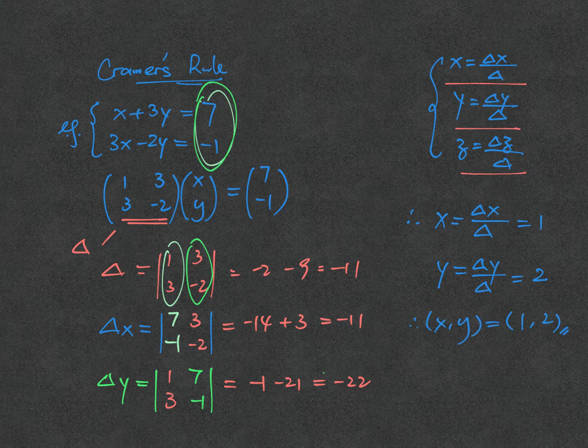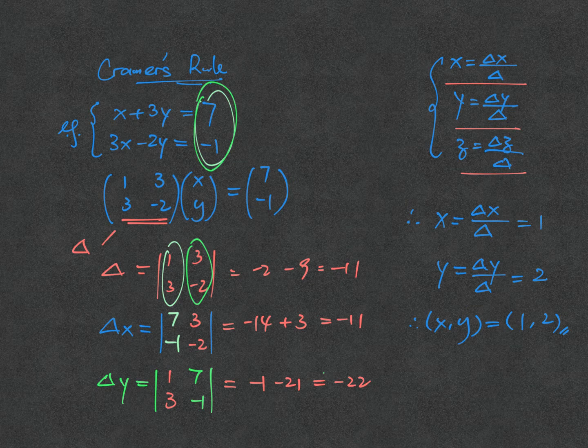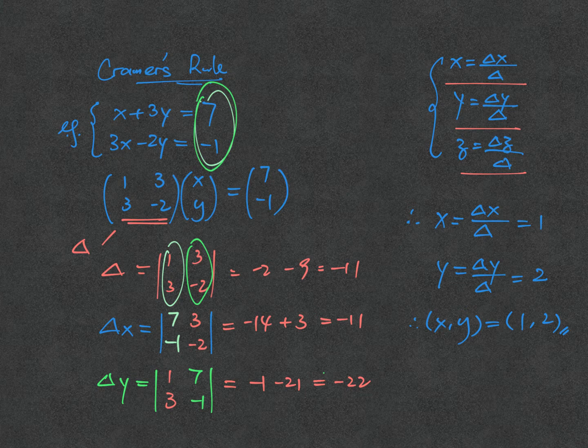Compared to using inverse matrix to solve a system of equations, you'll find that Cramer's rule is much, much easier and convenient, because it only requires finding the determinant, while inverse requires dealing with finding adjoint, transpose, determinants, etc.